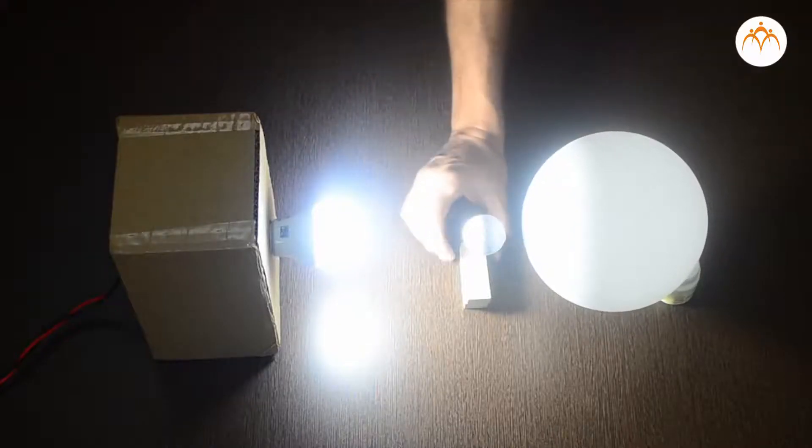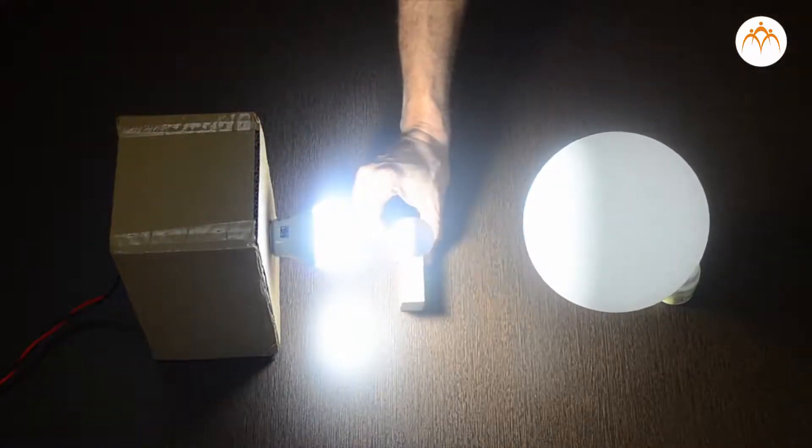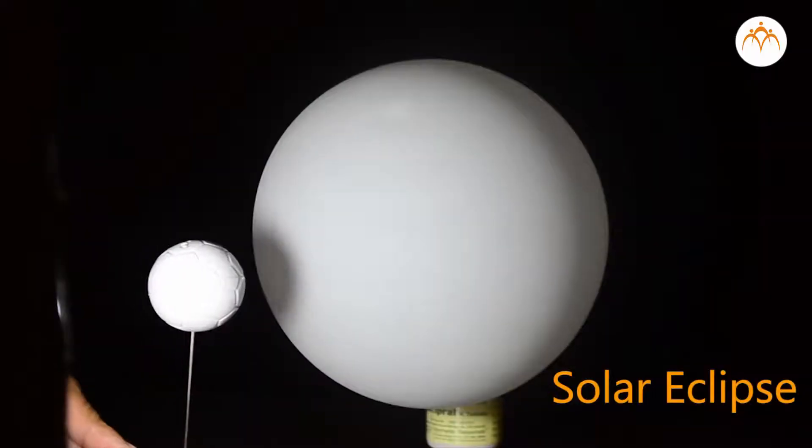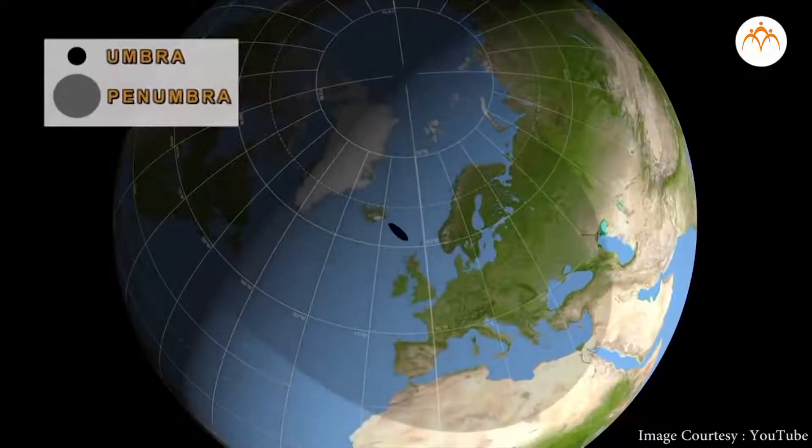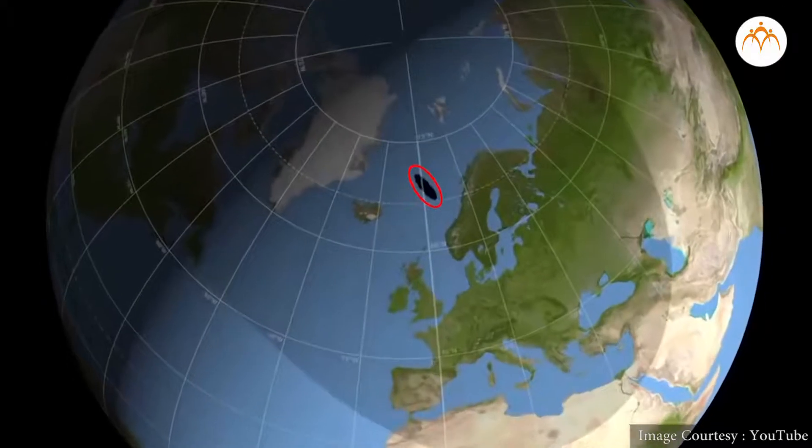When this small ball is in between the sun and Earth, we see a solar eclipse. As you can see, there are two areas on the Earth: umbra and penumbra. Umbra is where there is total darkness. This is where we do not see the sun during eclipse.